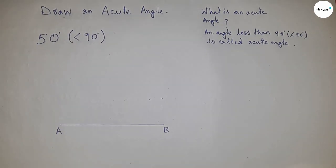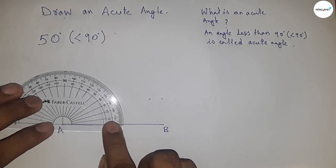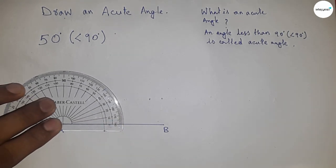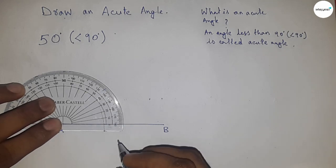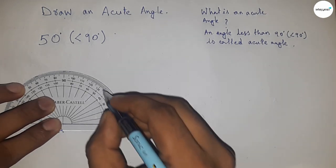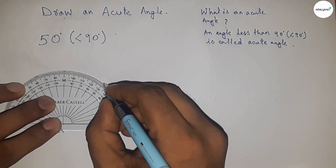Putting the protractor on point A. This is 0, 10, 30, 45, so this is 50 degrees.